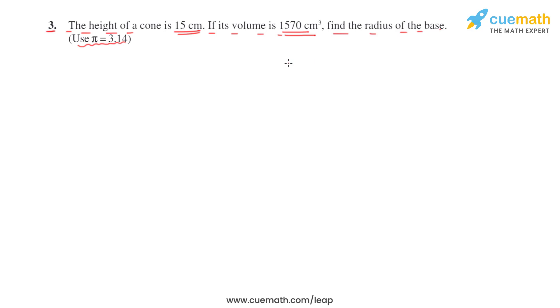They have given the height of the cone and its volume and then we have to find the radius of the base. Let the radius be r. Now, we know that the formula for volume is 1 by 3 pi r square h.